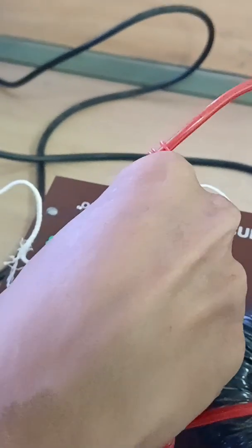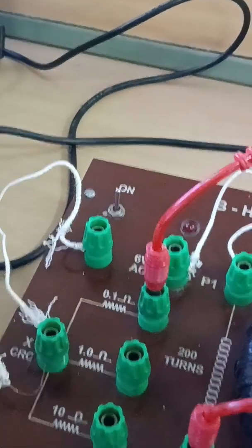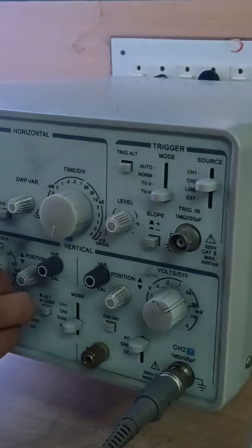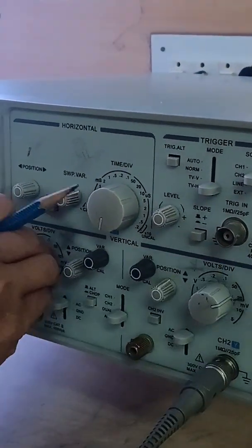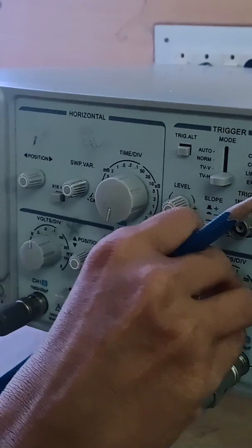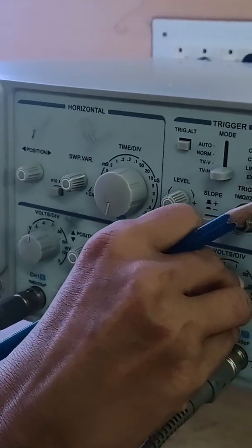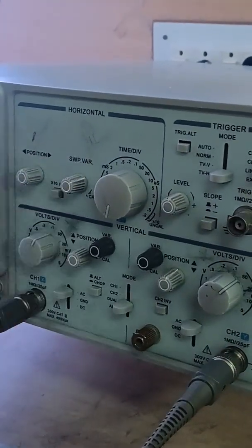For example, I will put the wire in the resistance 0.1 ohms. The curve comes like this. Here this is channel 1 and channel 2.